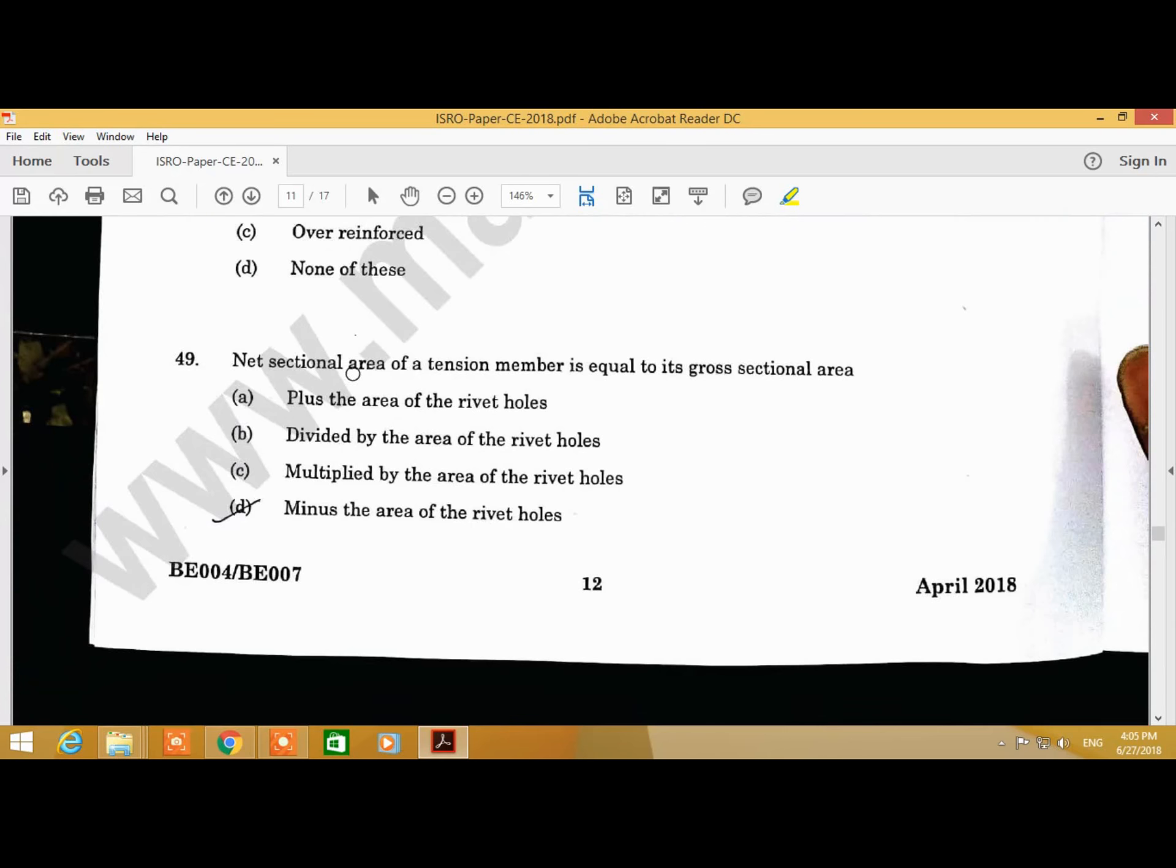Question Number 49: The net sectional area of a tension member is equal to its cross sectional area. Answer is D, minus the area of the rivet holes.